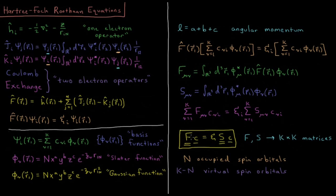In total, our Fock operator will have n occupied spin orbitals and k minus n virtual spin orbitals. So we have n electrons and k total atomic orbitals: n of them are occupied with electrons, and k minus n are unoccupied or virtual orbitals that we could excite electrons into if we were to absorb a photon of energy or by any other manner of excitation.